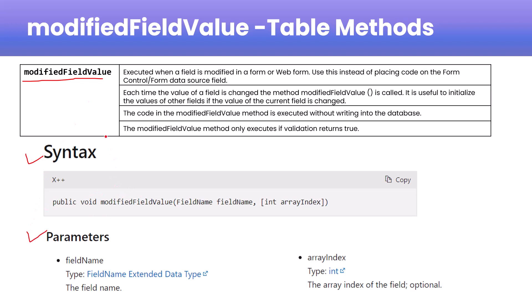The first point is that this method — ModifiedFieldValue — is executed when a field is modified in a form or a web form. You can use this instead of placing code on the form controller or form data source method. You can use it directly at the table level, at the form level, or at the form data source field level, based on your requirement.